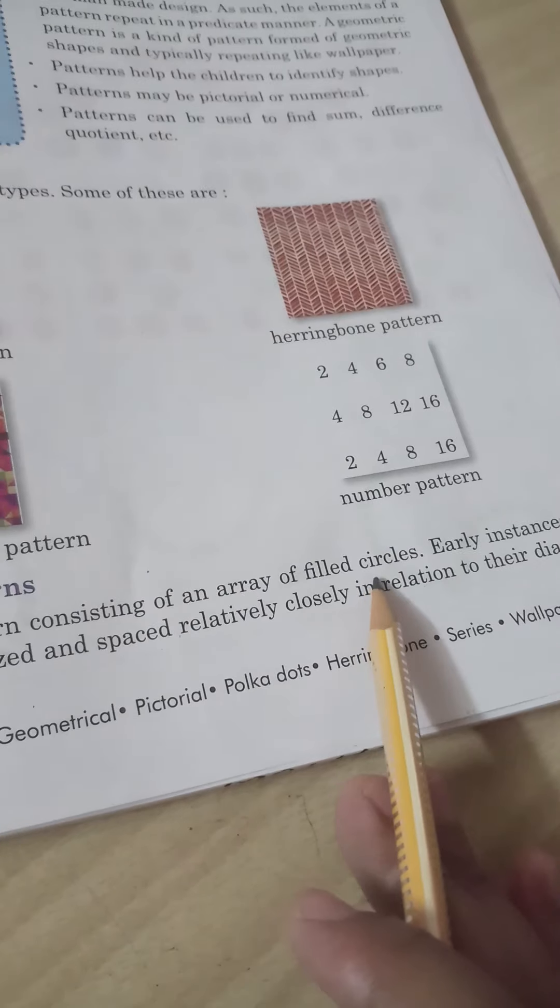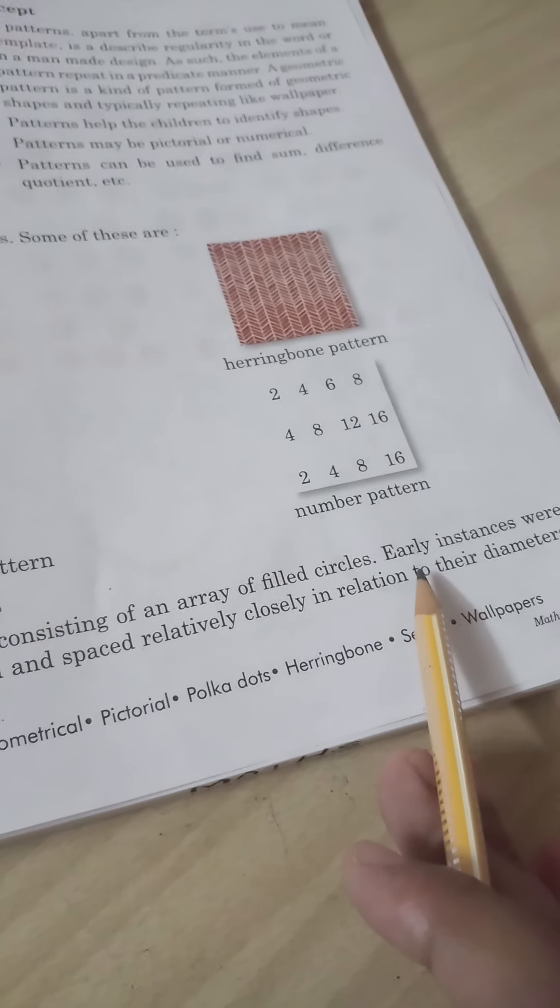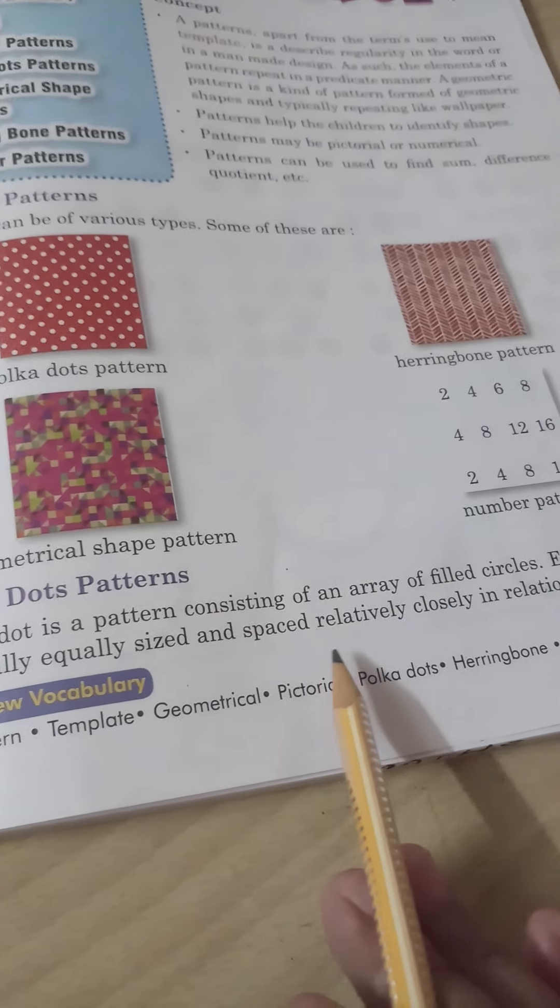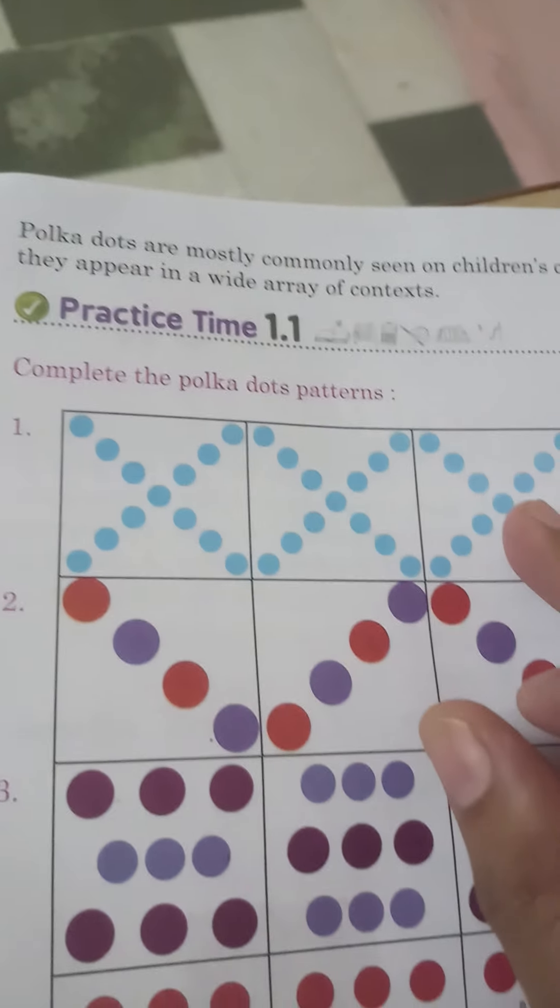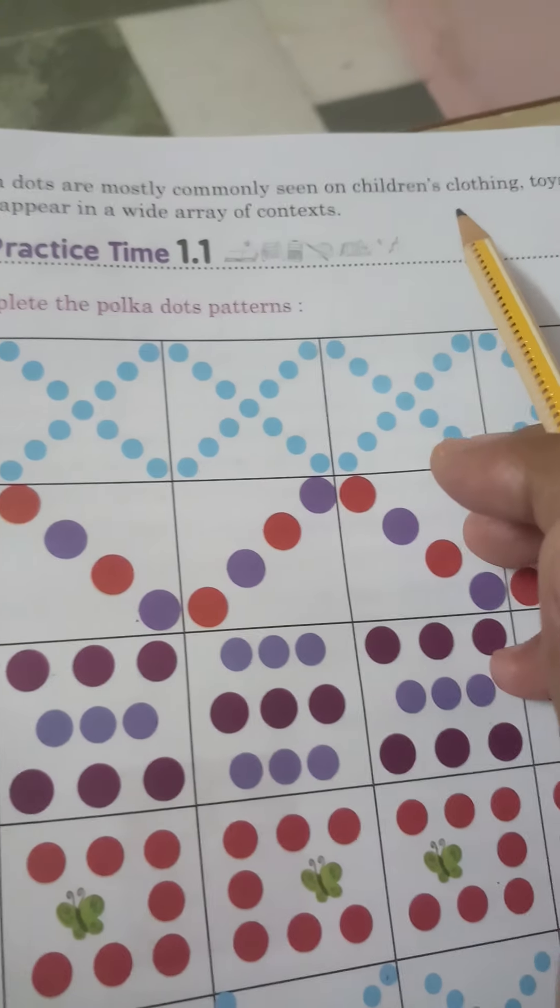Today we are going to study about the polka dot pattern. Now start. Polka dot is a pattern consisting of an array of filled circles. Early instances were generally equally sized and spaced relatively closely in relation to their diameters.